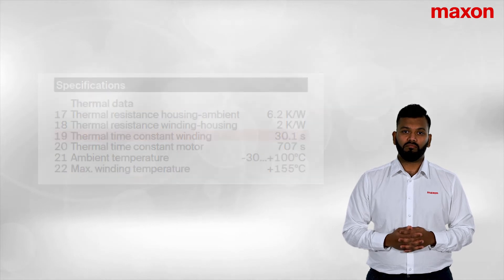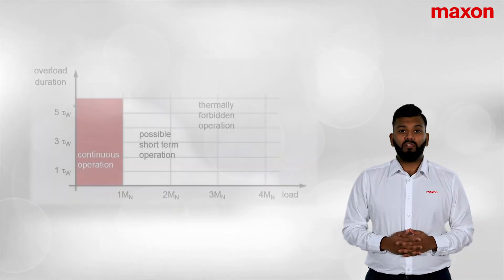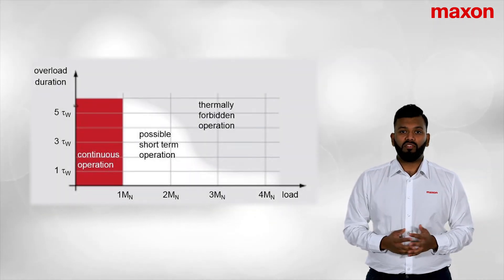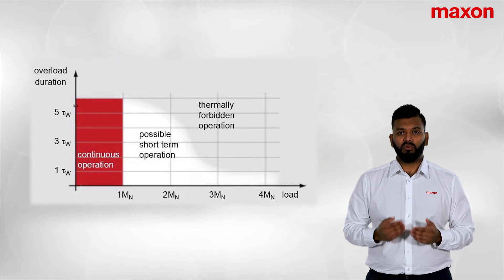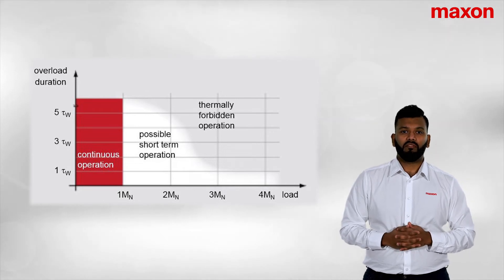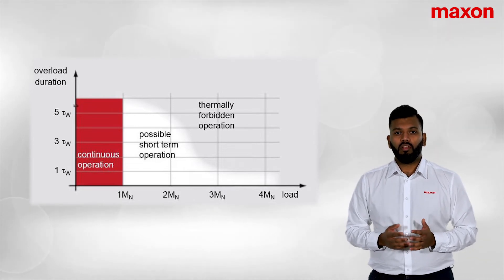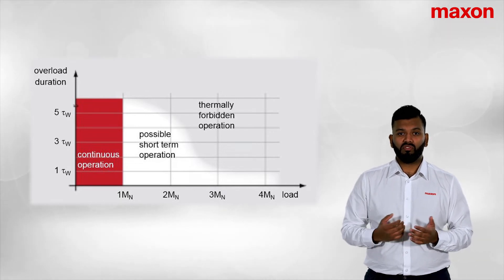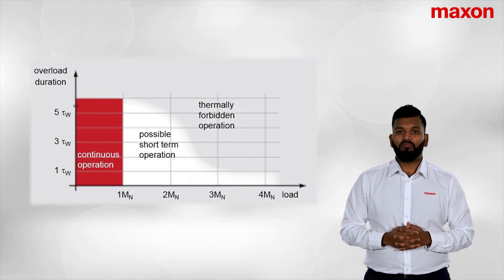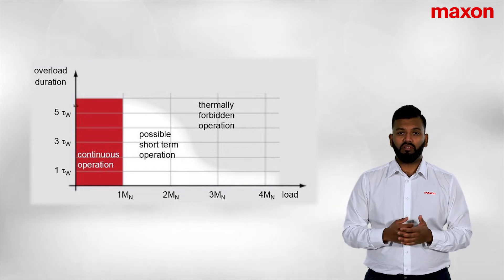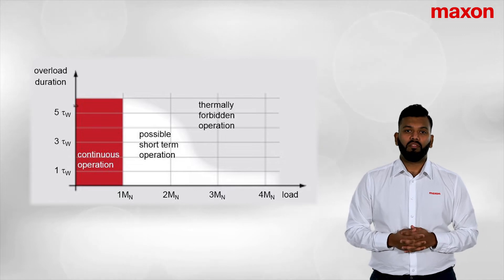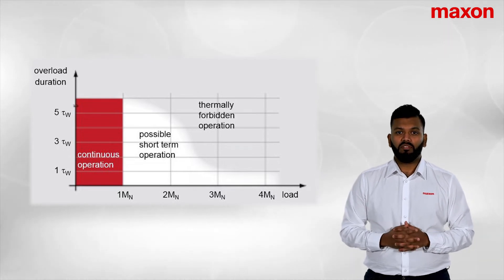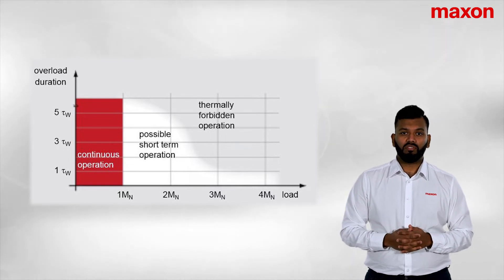The limits can be found in line 19 of our datasheet — this is the thermal time constant. How far you can push a motor depends on its construction and size. Depending on whether it's a large motor or a small motor, the time you can push it will vary.